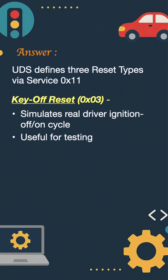Key off reset is like turning off the car with the key and starting it again. It simulates a real driver ignition off-on cycle for testing.